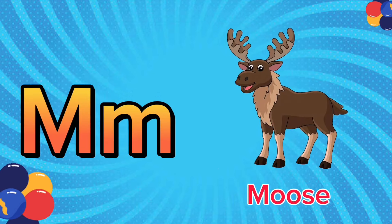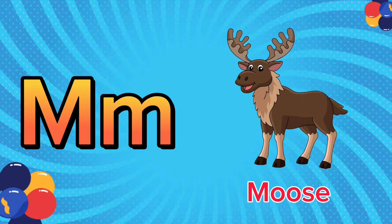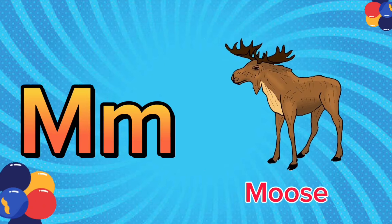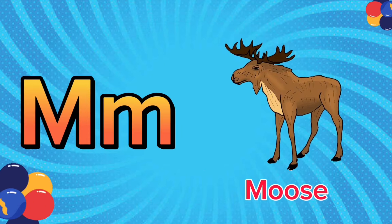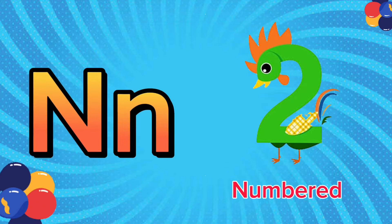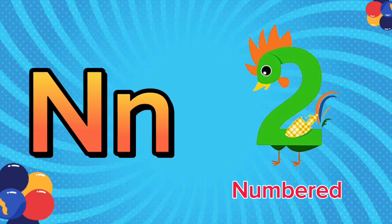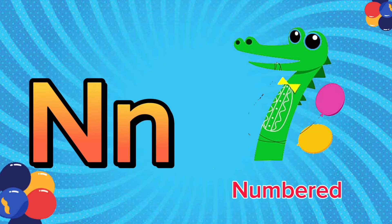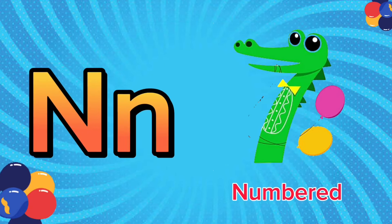M is for moose. M, M. Moose. M is for moose. M, M. N is for numbat. N, N. Numbat. N is for numbat. N, N.